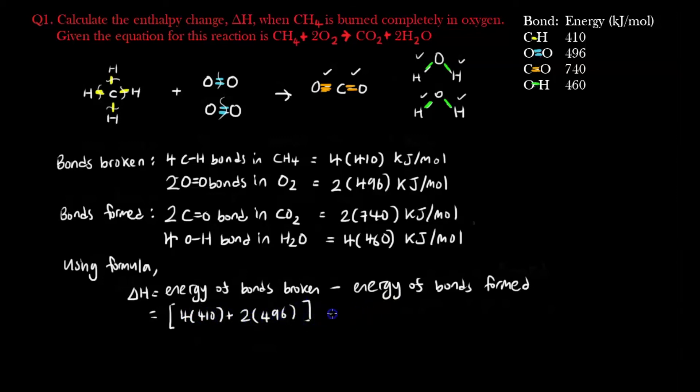Minus away energy of what's being formed here, which are these two, so 2 times 740 plus 4 times 460. And using calculator, you don't have to write out the value, it's just too tedious, that's mathematics. In chemistry, we can just use calculator, but we have to show this intermediate step.